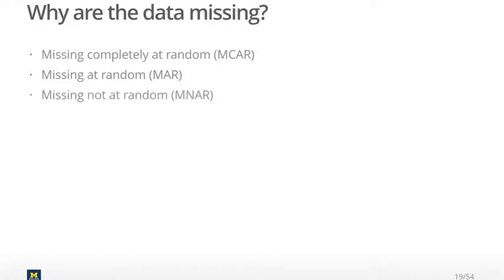And then there's missing not at random, or MNAR. So let's walk through each of these individually and think about why data may go missing that belong to each of these three categories.